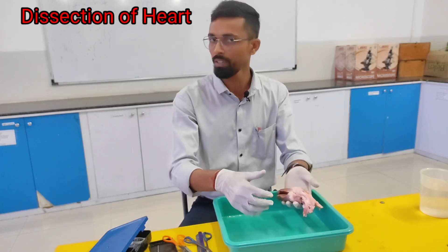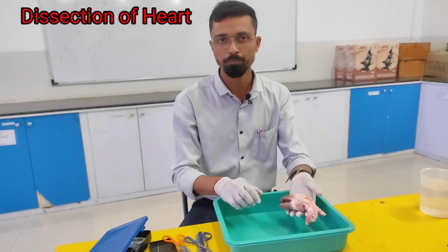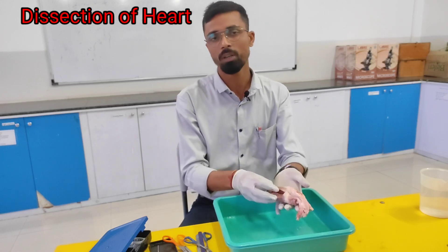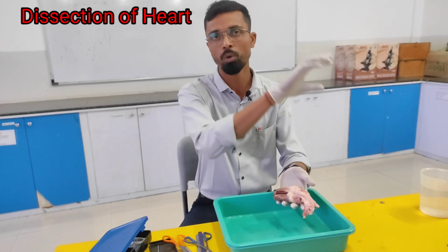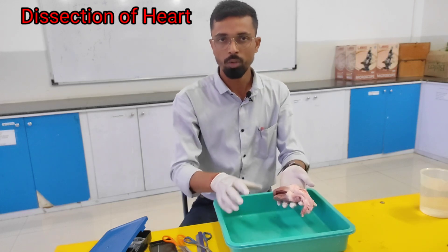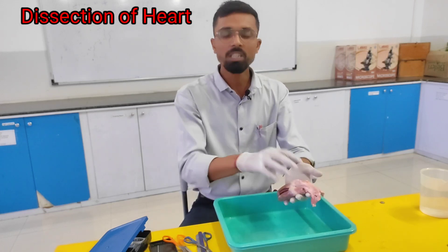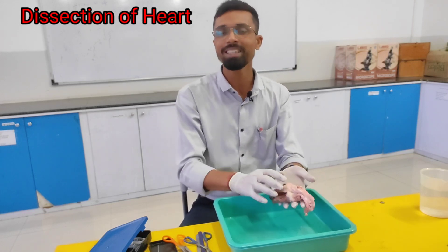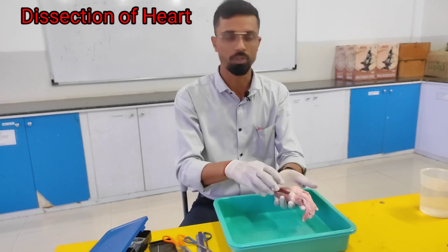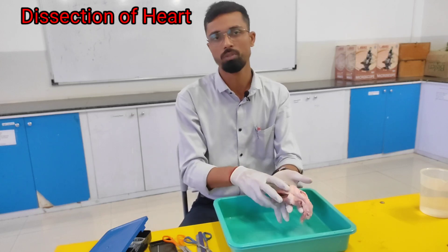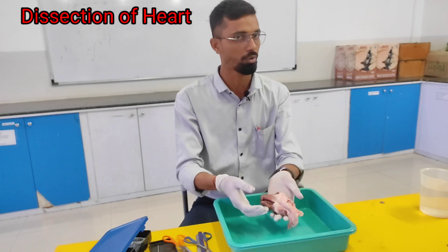The blood comes back from the pulmonary veins into the left atrium. Then from the left ventricle, it goes all over the body through the aorta. In this video, we will see about the heart structures, the parts where they are located, and their functions.